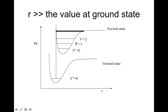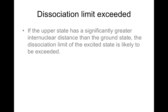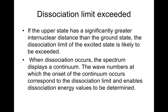In Case C, we consider the dissociation limit being exceeded. If the upper state has a significantly greater internuclear distance than the ground state, the dissociation limit of the excited state is likely to be exceeded. When dissociation occurs, the spectrum displays a continuum.